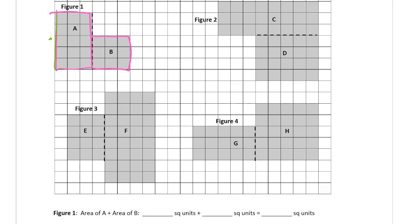So we can just get the line for figure 1 here. So the area of A plus the area of B. So the area of A is, you can count the squares, but you can see that it's 1, 2, 3, 4, 5 rows of 3, which is 15. And the area of B is 3 rows of 3, which is 9. So 15 square units plus 9 square units. That's 24 square units.